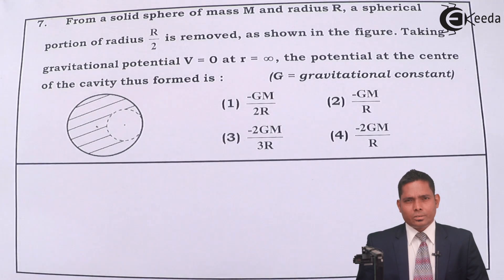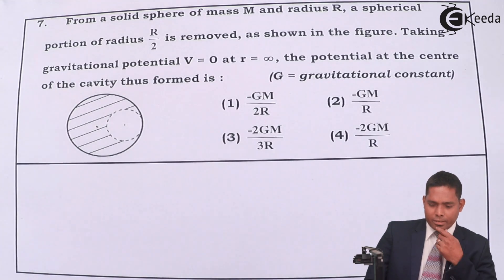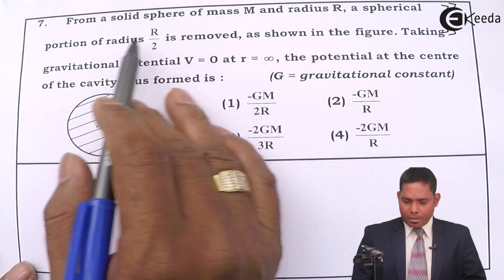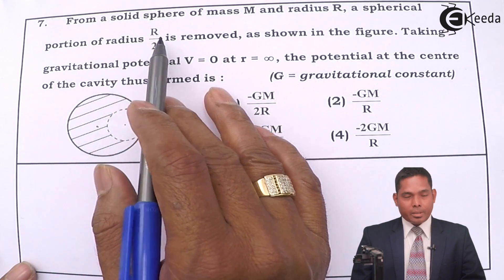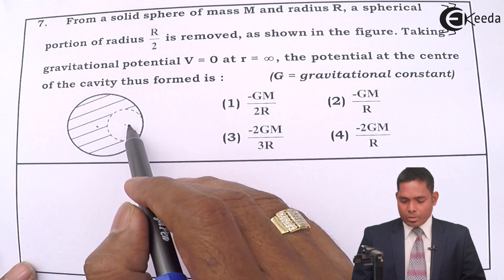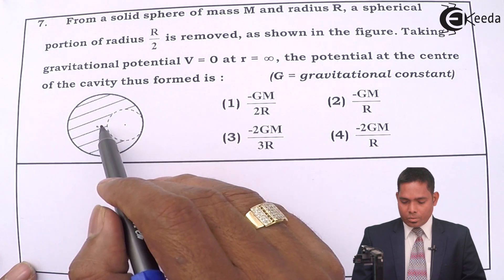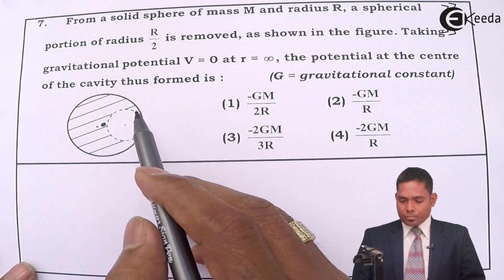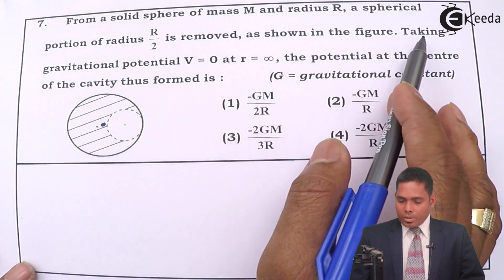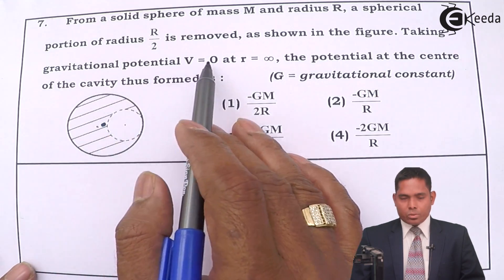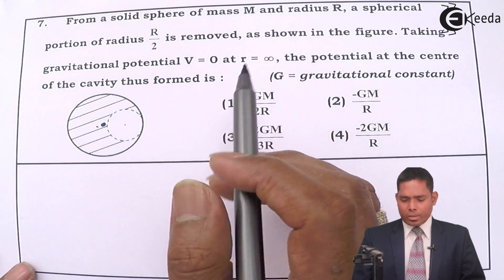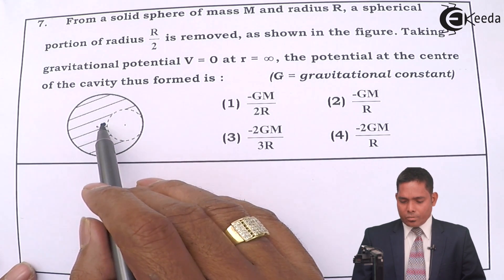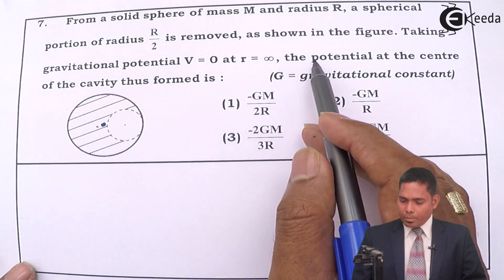We move to question number seven. It says that from a solid sphere of mass M and radius R, a spherical portion of radius R/2 is removed. Taking the gravitational potential V equals zero at infinity, we need to find the potential at the center of the cavity thus formed.